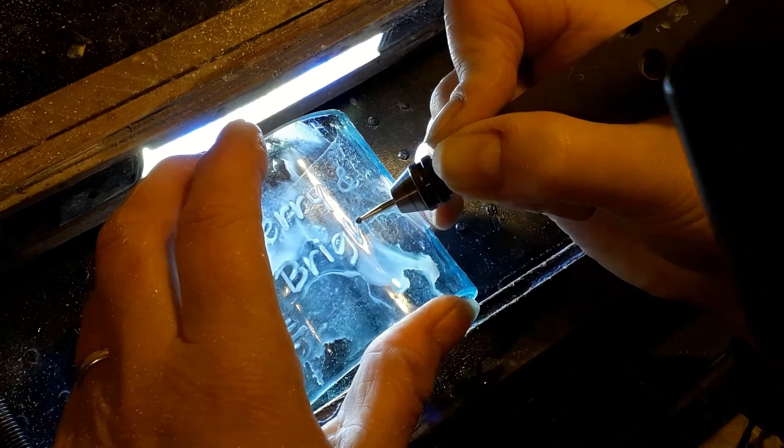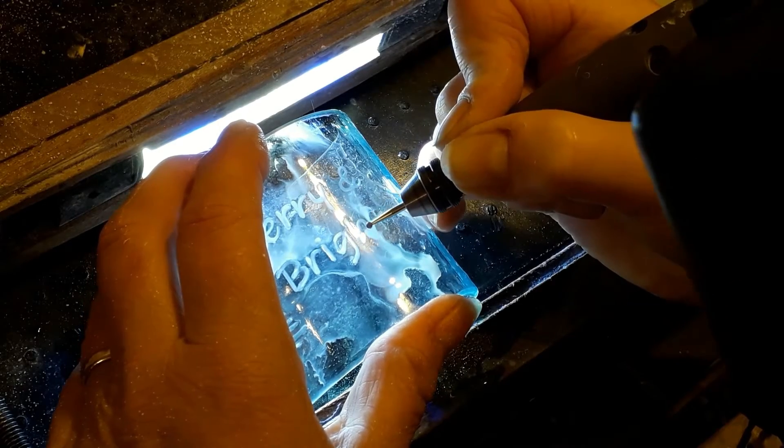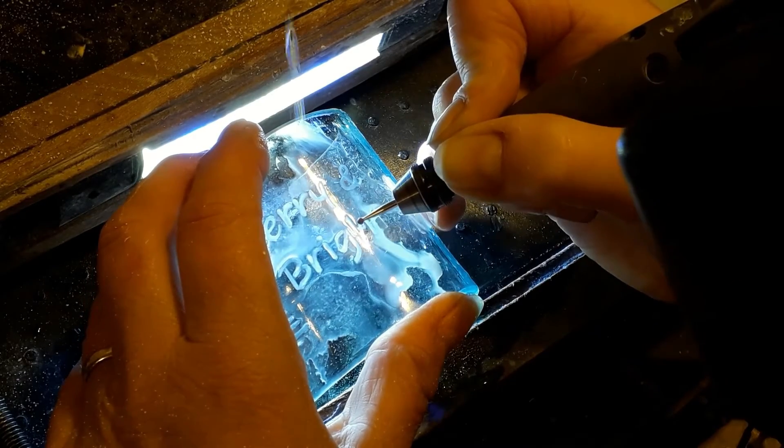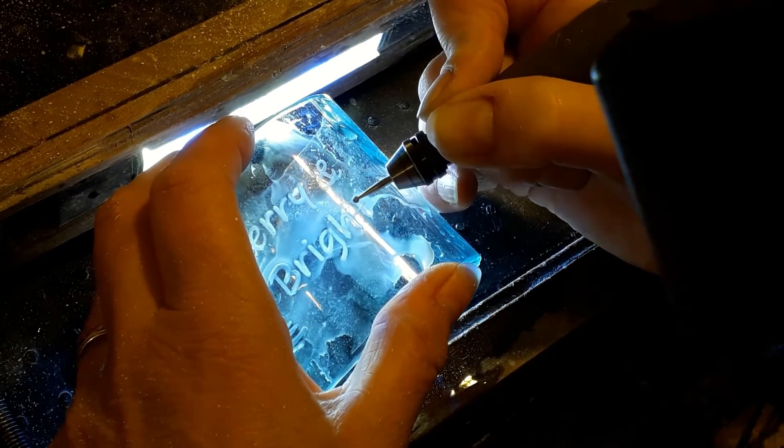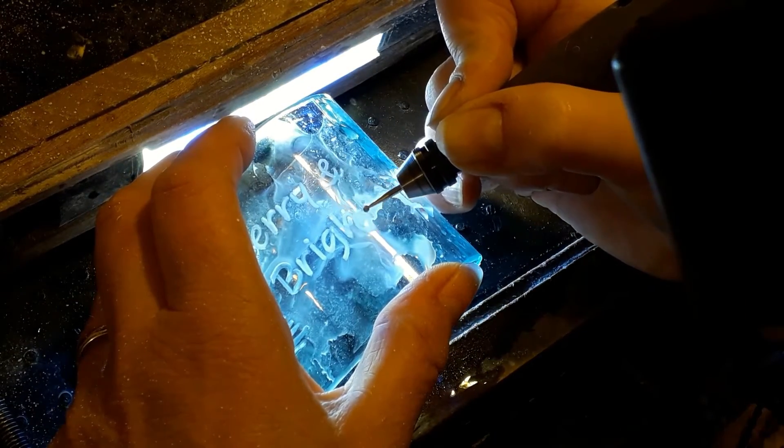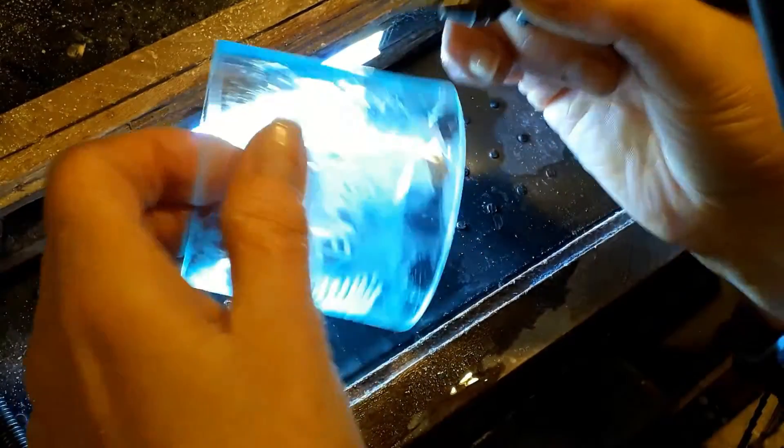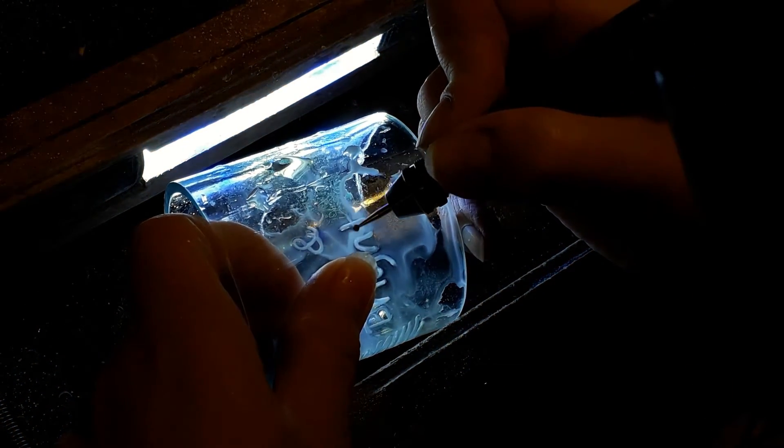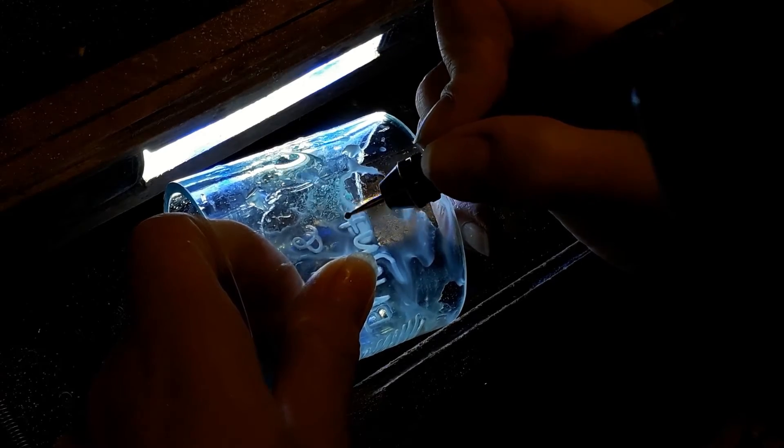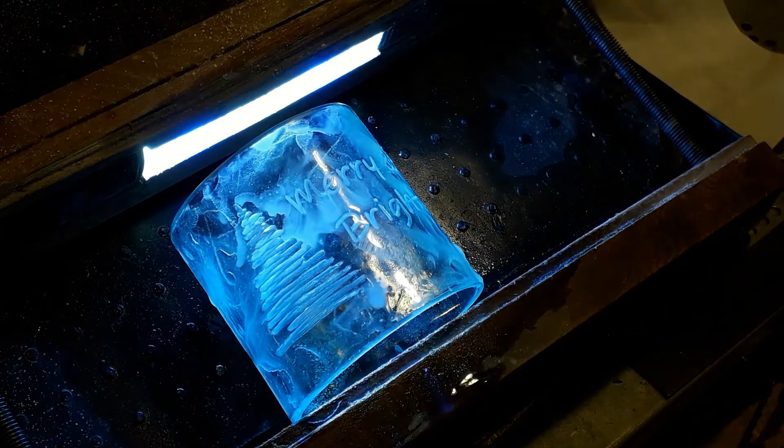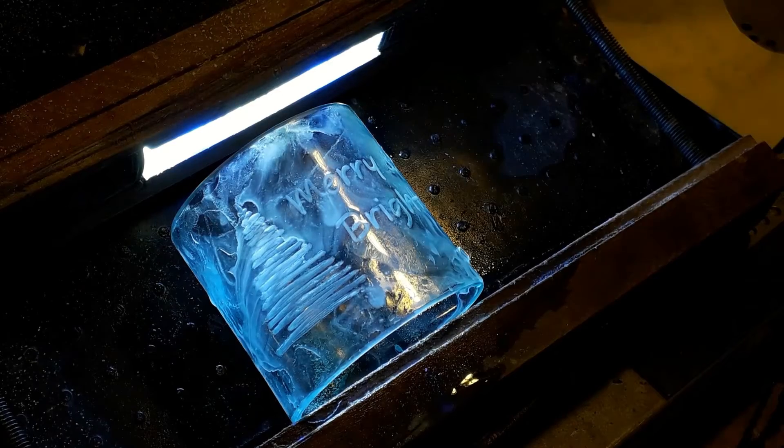I've just continued the process of going over the lines until we get along to the last letter, the last little letter T here. Now if I give it a wipe and a dry off, you'll be able to see the engraving a little bit more clearly.